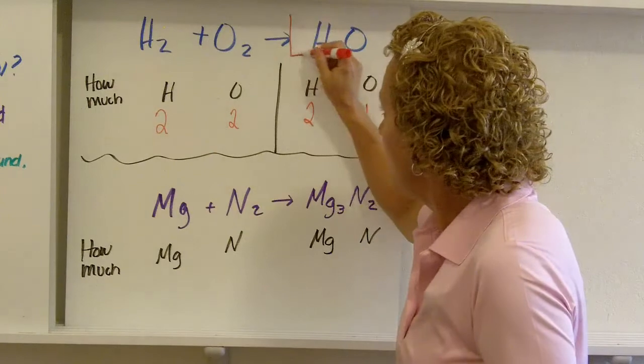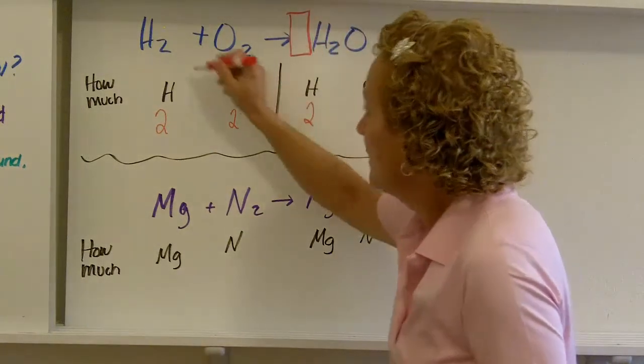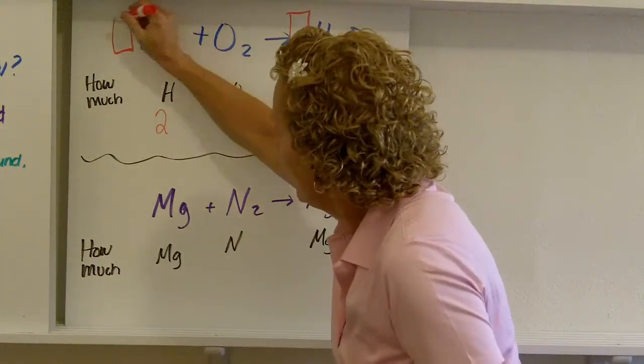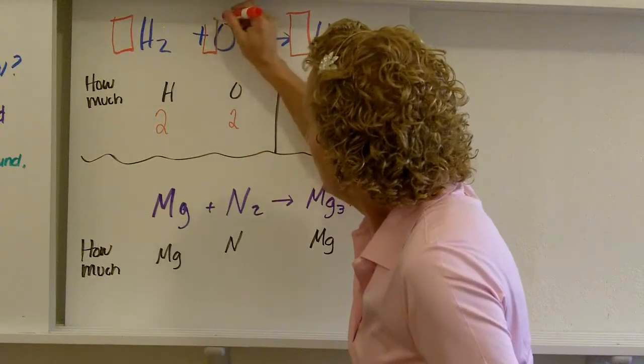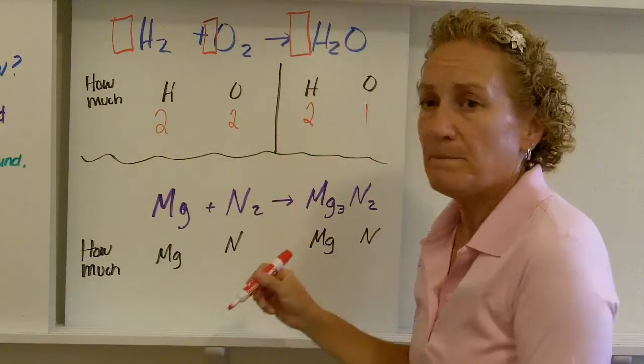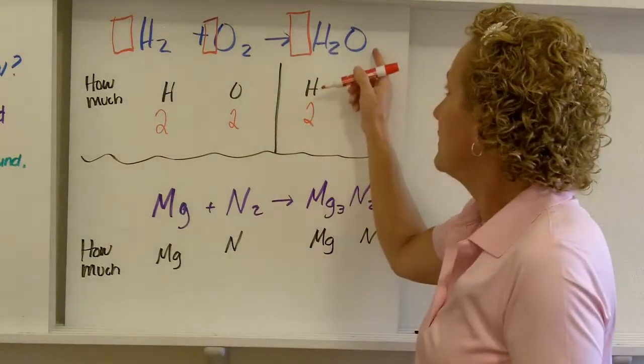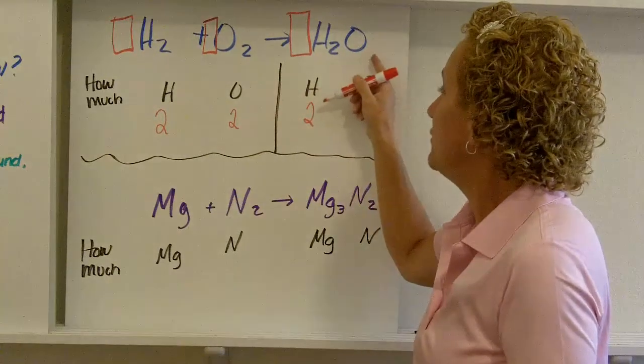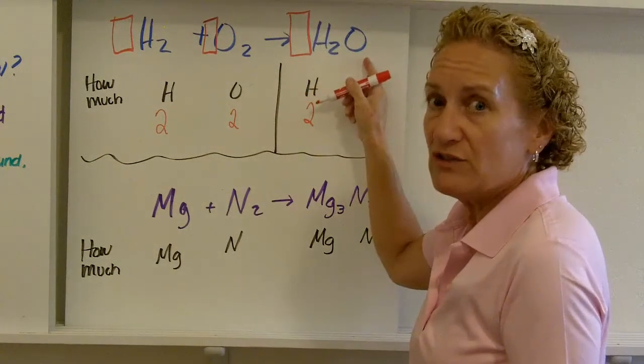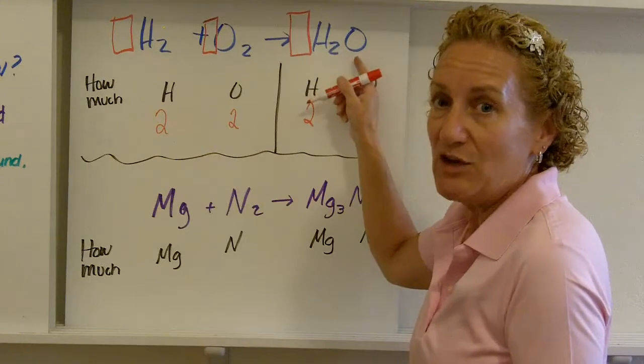The only thing I'm allowed to change is a thing called the coefficient, which is that little number in front of a chemical symbol. I can't change the subscript. It would be great if I could just put two here. But H2O2 is no longer water. And we know it makes water.